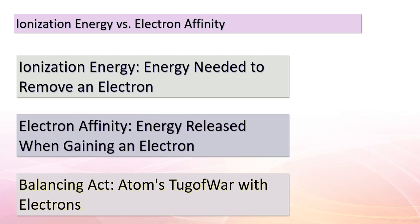Let's compare electron affinity with ionization energy — think of these as two sides of a coin. Ionization energy is the energy required to remove an electron from an atom's grasp. Electron affinity is the energy released when an atom gains an electron. When an atom captures an electron, it releases energy equal to its electron affinity; when it loses an electron, the energy invested is returned as ionization energy. This constant exchange of energy as atoms interact with electrons shapes their behavior and chemical properties.